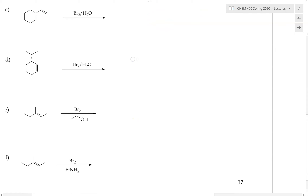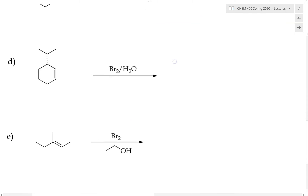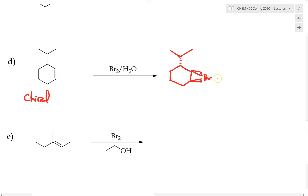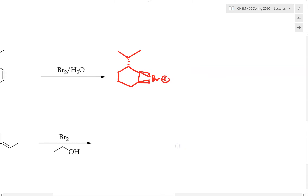Now let's go over an example with a complex alkene. Let's try example D, which is a chiral starting material. When this alkene interacts with bromine, we form the bromonium ion. The isopropyl group is a bulky group currently pointing down, so bromine attacks from the top side, forming a bromonium ion with bromine pointing up. Once we have this, the next step is nucleophilic attack by water.